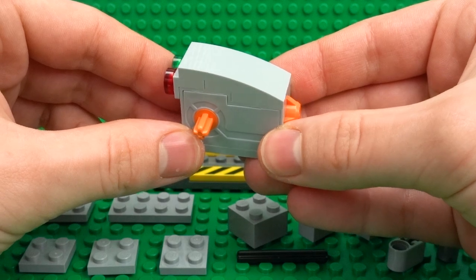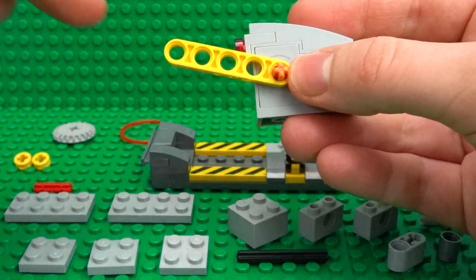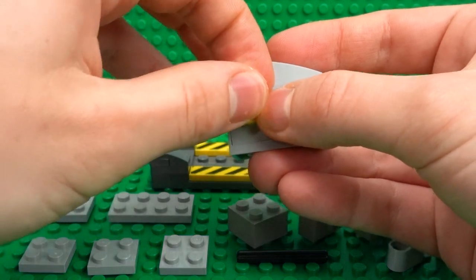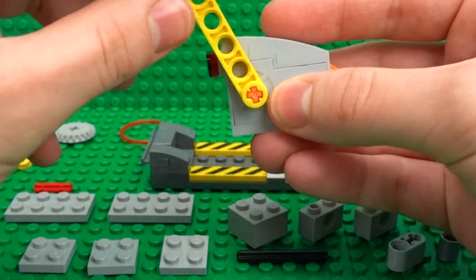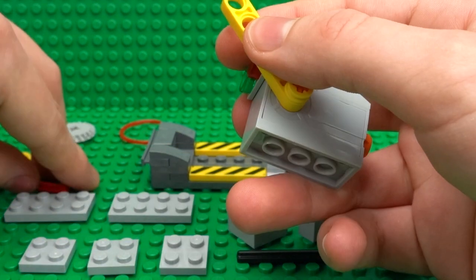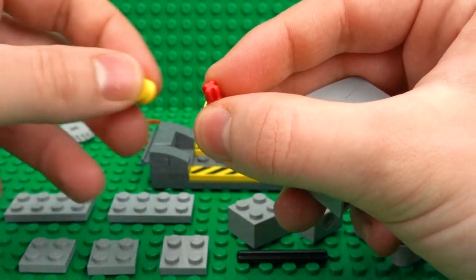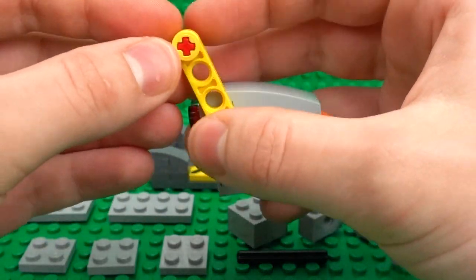Then finish that off with this large slope piece and then we can start to build the actual saw itself. So this is nice and simple. Choose that 1x5 half lift arm, so that should be nice and loose with a half bush on this side.